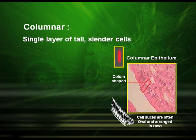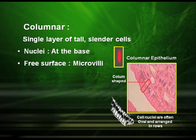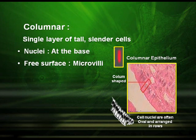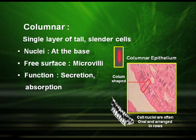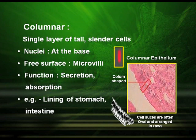Columnar epithelial tissue is made up of a single layer of slender cells. The nuclei are found at the base and the free surface has structures called microvilli. These are columnar shaped and their function is secretion and absorption. They are found in the lining of the stomach and intestine.